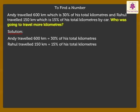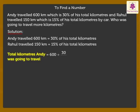Now, here we have to find who was going to travel more kilometres. Let's start with Andy. Total kilometres Andy was going to travel is equal to 600 divided by 30 upon 100. Here, by calculating and reducing the numbers, we get the answer as 2000 kilometres.